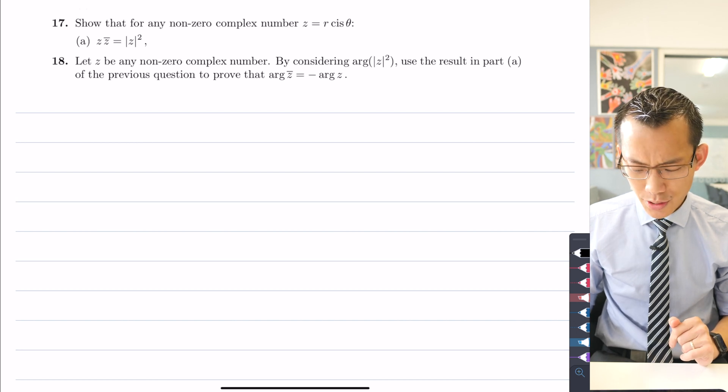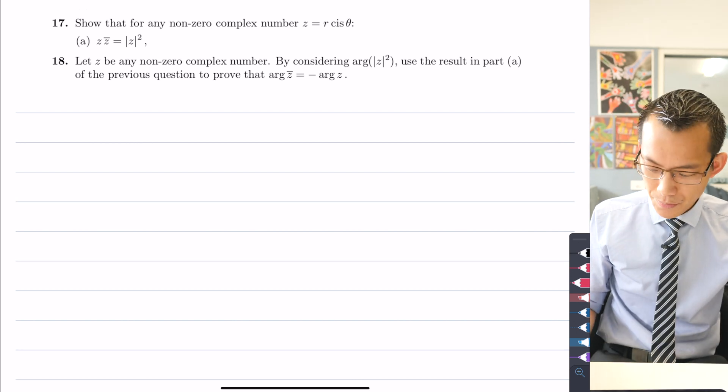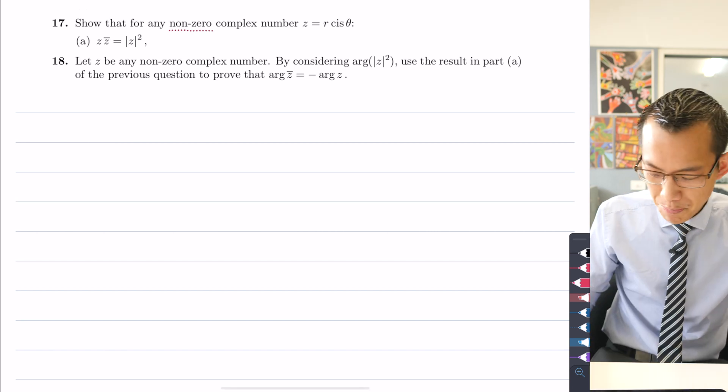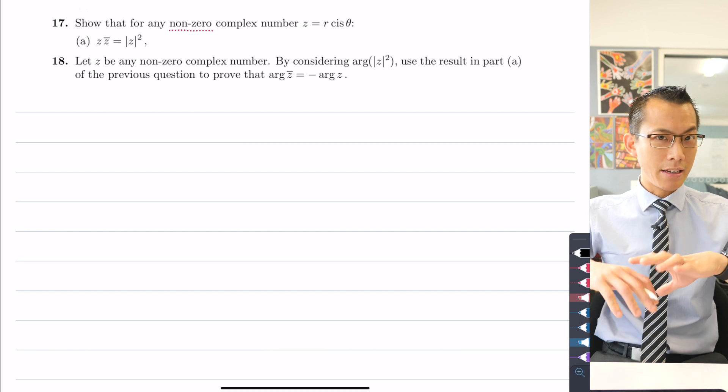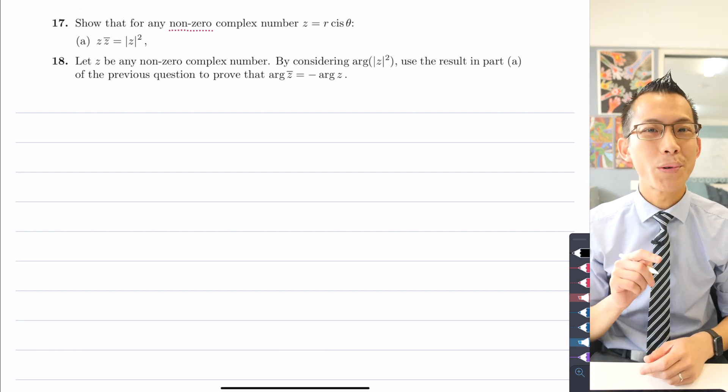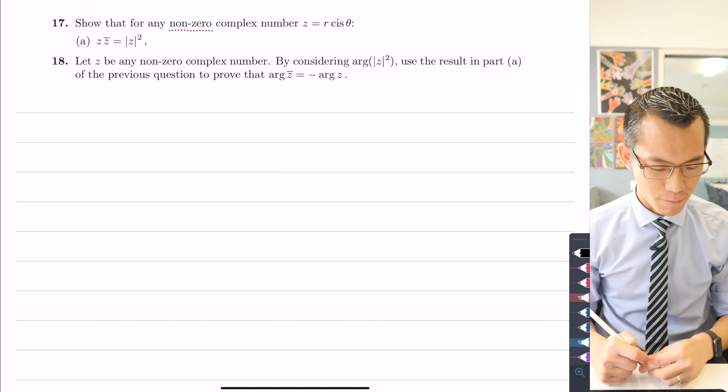The first thing I'm going to flag, which seems a little bit unusual, is that this question says show that for any non-zero complex number, so they're actually saying any complex number except for the origin, that's the only one we're excluding. We will come back to that point a little bit later on.